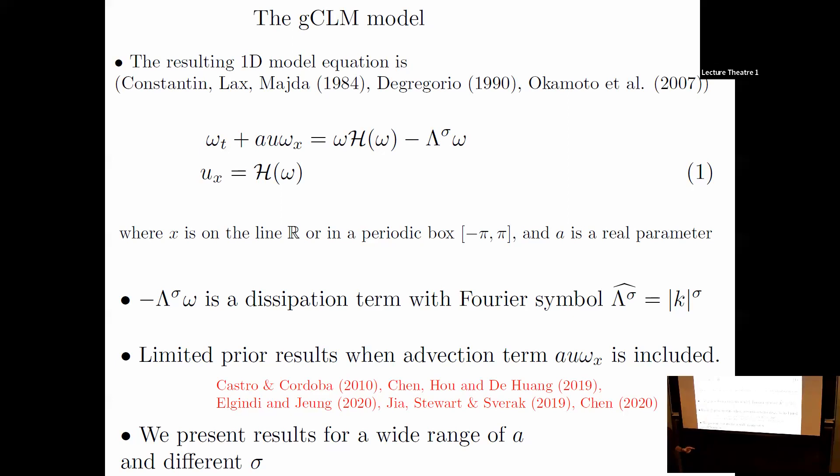There are lots of results on this equation. Many well-known analysts have worked on it. To summarize, the only results are for certain values of A: some negative values, A equals zero, one-half, and one. We're going to present results for a wide range of A and different sigma.